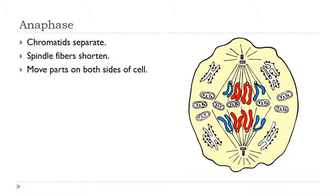Here is anaphase. The chromatids will now separate — we use the phrase chromatids because one half of that X-shaped chromosome is called a chromatid. The spindle fibers — the spider legs — are now shortening, getting reeled up by the centrioles, and those parts move to opposite sides of the cell. You can also see in our diagram there are mitochondria that have been replicated and produced, and they're now going to separate as well. That really finishes up going into telophase.